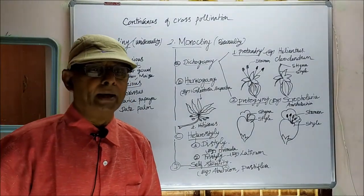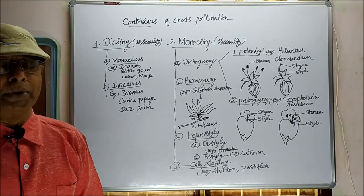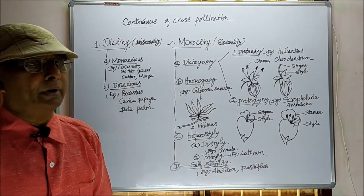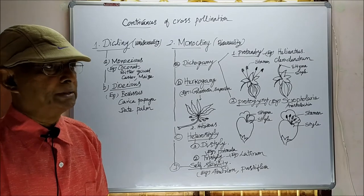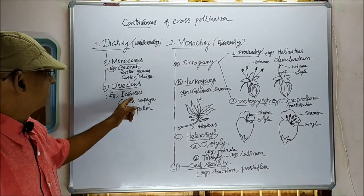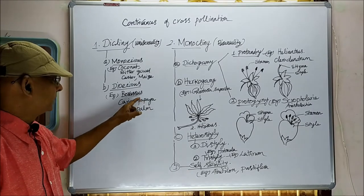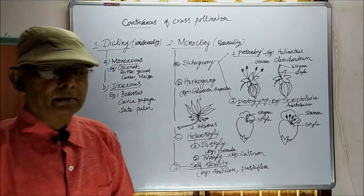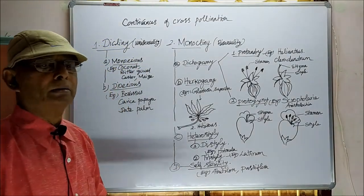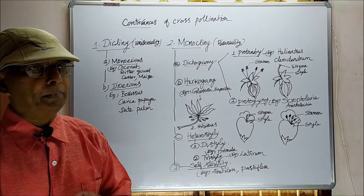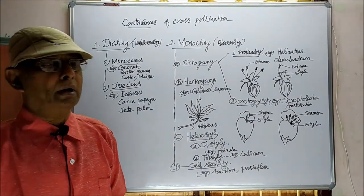In dioecious condition, in some plants, only male flowers or only female flowers are produced. Male plants produce male flowers; female plants produce female flowers. In the case of borassus, carica papaya, and date palm, two different plants can be differentiated — male plant and female plant. That is the dioecious condition. In dioecious condition, both autogamy and geitonogamy are prevented — they cannot take place in these plants.